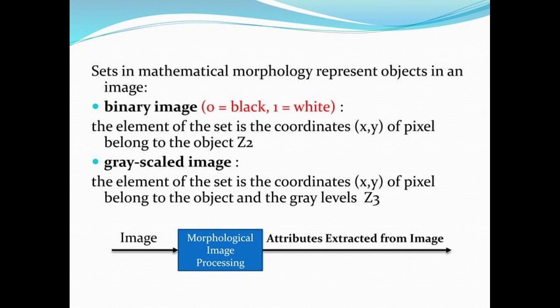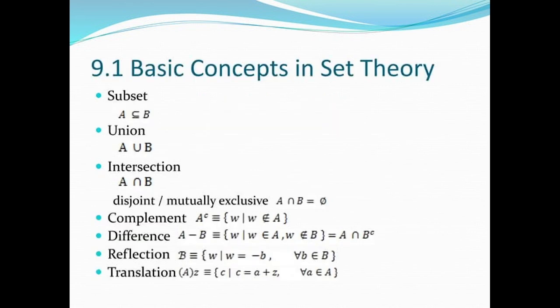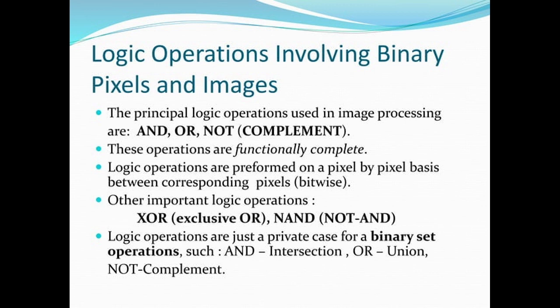In general, we give an image to morphological image processing and extract its attributes. The basic set concepts — subset, union, intersection, disjoint, complement, and difference — are already well known. Logical operations on binary pixels and images involve the basic gates: AND, OR, and NOT, which are functionally complete. These logic operations are performed on a pixel-by-pixel basis. AND corresponds to intersection, OR to union, and NOT to complement.